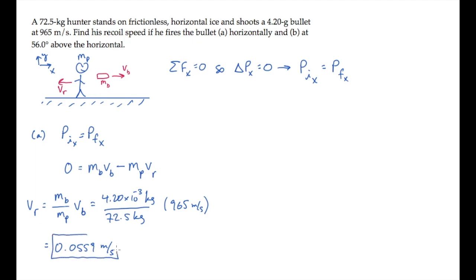Part B asks us to find the recoil speed if the bullet is fired at 56 degrees above the horizontal. I'll draw that in green here, where theta is 56 degrees. Again, we'll conserve momentum in the horizontal direction.